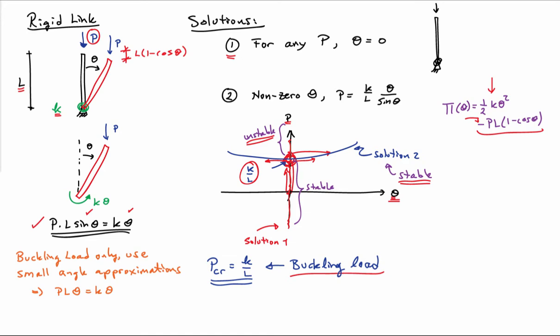If I do a small angle approximation on my equilibrium equation, I'll replace the sine theta with just simply a theta. So here's my new equilibrium equation, PL theta equals K theta. Theta equals zero is clearly still a solution, and that would be for any value of P. So that would be solution path one.